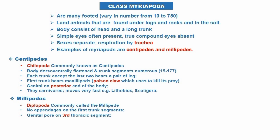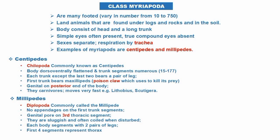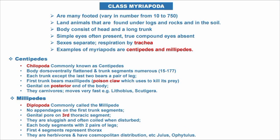Next, millipedes — also called class Diplopoda. There is no appendage on the first trunk segment. The genital pore is on the third thoracic segment. They are sluggish and often coil when disturbed.